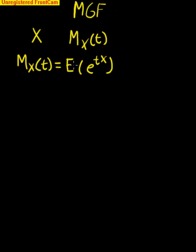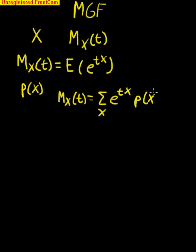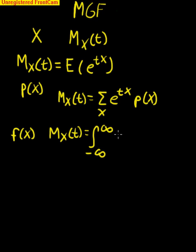Our moment generating function is equal to the expected value of e to the tX. So for a discrete random variable with our pmf, our probability mass function P(X), our moment generating function is equal to the summation across all X, e^(tX) times our probability mass function. For a continuous case where we have a pdf, probability density function, of course we're going to use integrals. It's going to look very similar, and these infinities just denote across the entire domain for a random variable X.